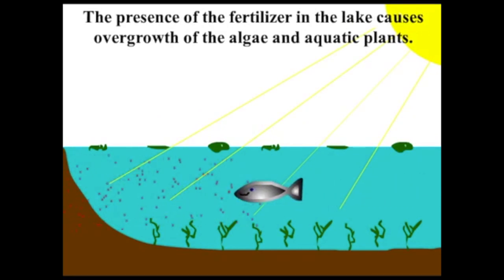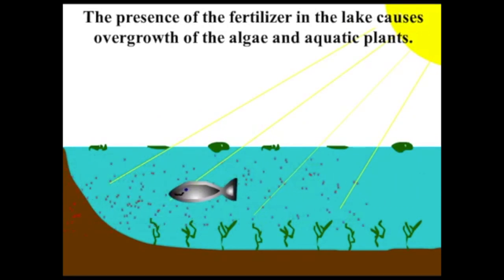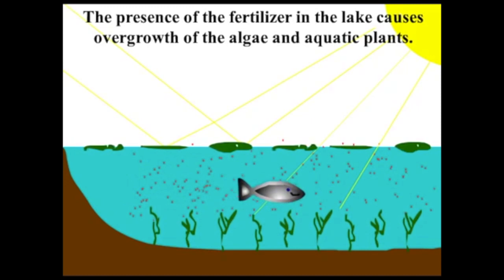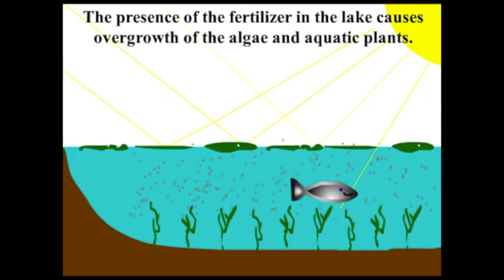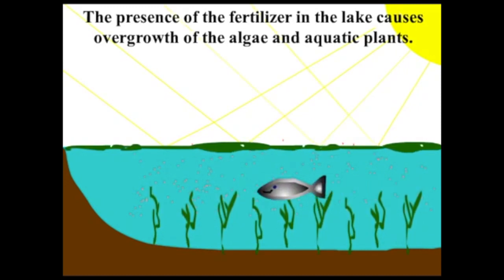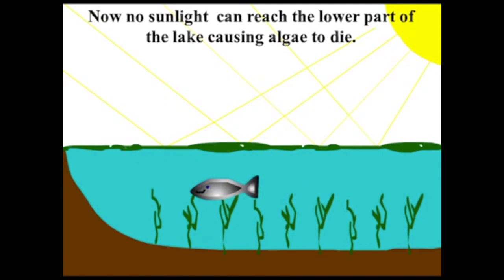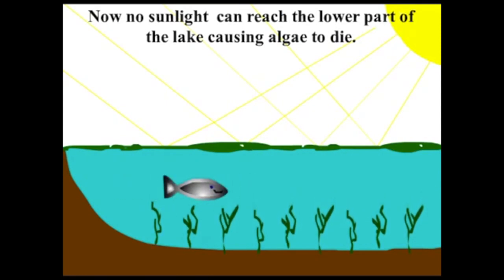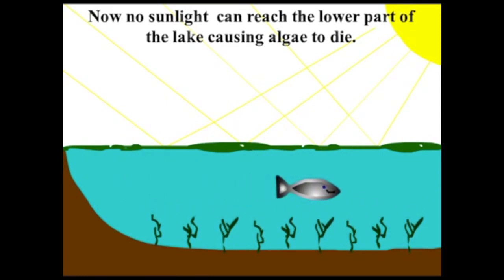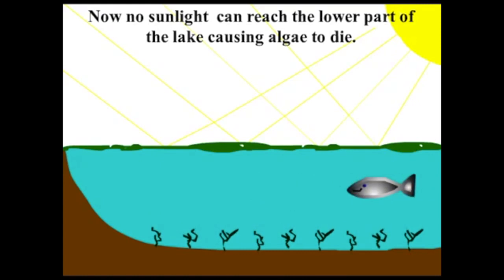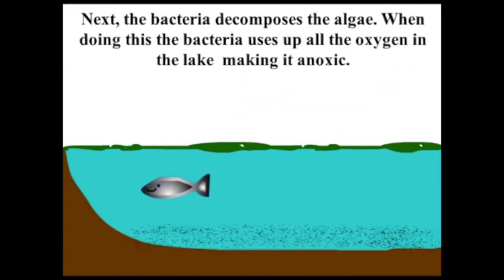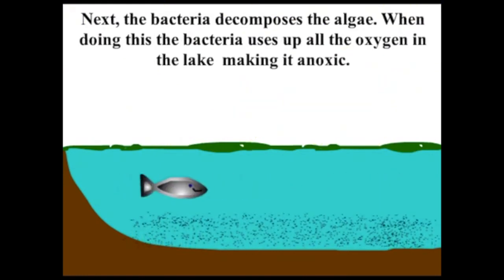Once the nitrates and phosphates arrive in the lake, they cause an overgrowth of plants, mostly algae and small organisms. And once these algae grow a lot, the sunlight cannot reach the bottom of the lake, causing most of the underwater plants to die from a lack of sunlight.